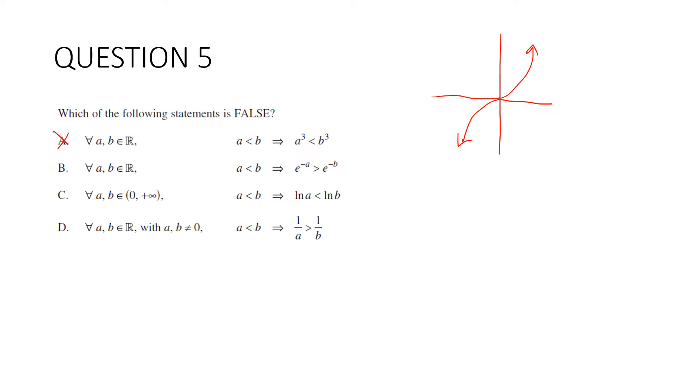b. a and b again are real numbers. a is less than b implies e to the negative a is greater than e to the negative b. What does the curve look like? e to the negative x looks like this. It is a decreasing curve. It's always decreasing. So as x increases, y decreases. b is true. c. a and b are positive real numbers. a is less than b implies ln a is less than ln b. What does the curve look like? y equals ln x is an increasing curve. It's always increasing. So c is also true.